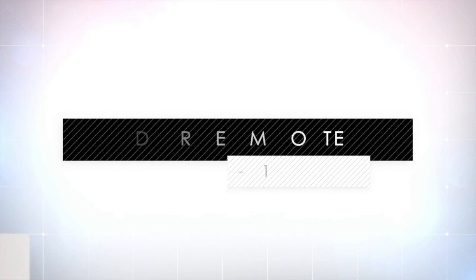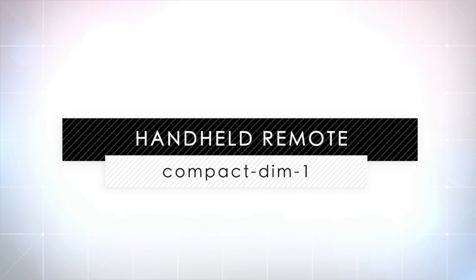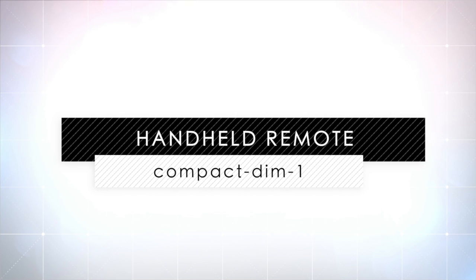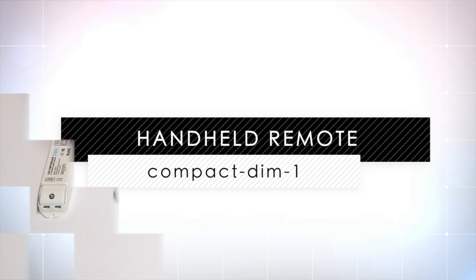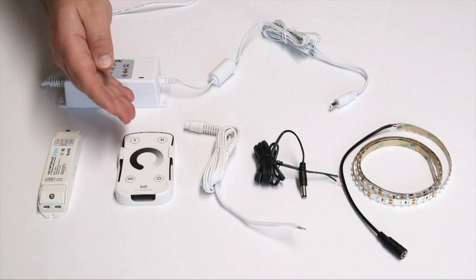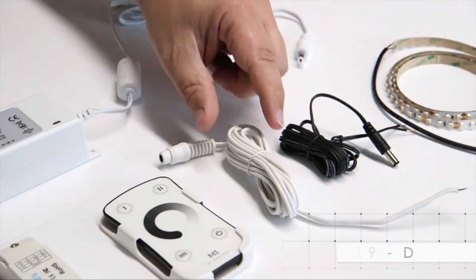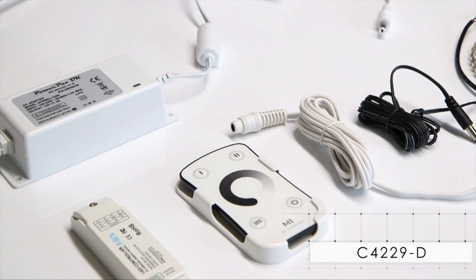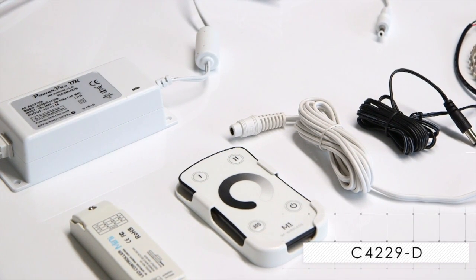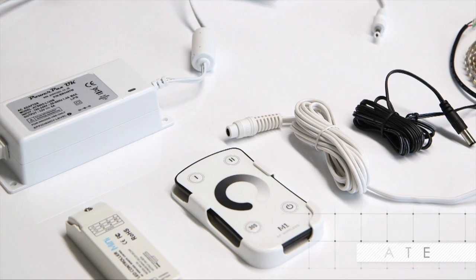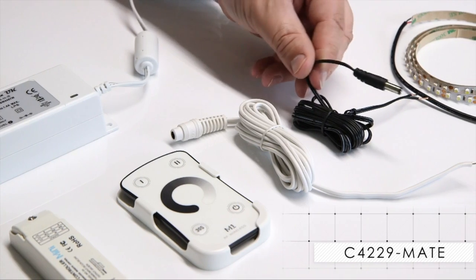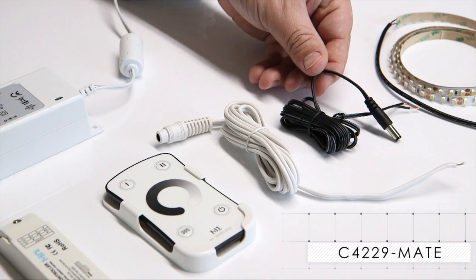We will now move on to demonstrate how our little handheld remote, order code COMPACTDIMM1, which is supplied as two parts, can be used to control your LED strip. We will use the same LED strip and power supply as before, as well as cable part number C4229D, which will allow us to quickly connect the power supply to the receiver part of the controller, and cable part C4229MATE to help connect the strip into the controller.